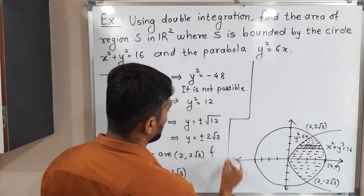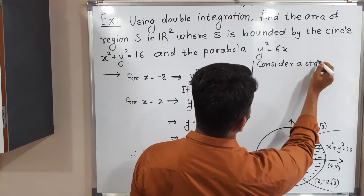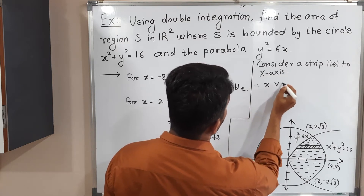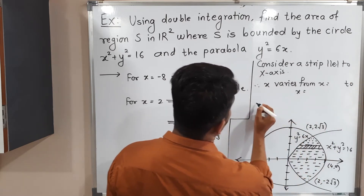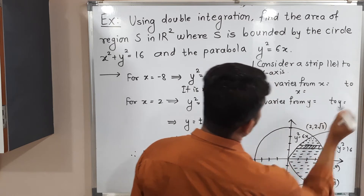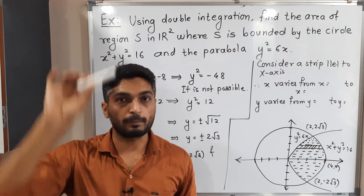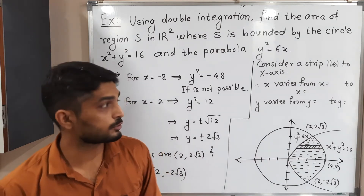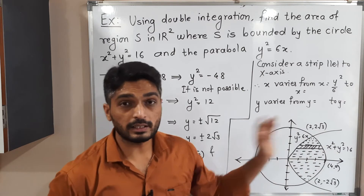Consider a strip parallel to the x-axis. The strip is bounded below by a part of the parabola, whose equation is y² = 6x, so x = y²/6. x varies from x = y²/6. The strip moves from bottom to top.